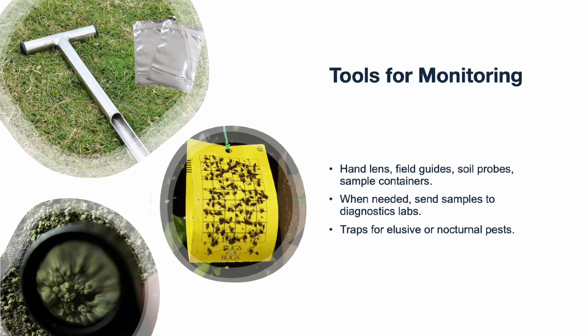We use a variety of tools to inspect and diagnose issues. Hand lenses, soil probes, and field guides are staples. Sample containers help us collect material for lab analysis when needed. Traps are used for pests that hide or are active at night. Each tool helps us refine our decisions.